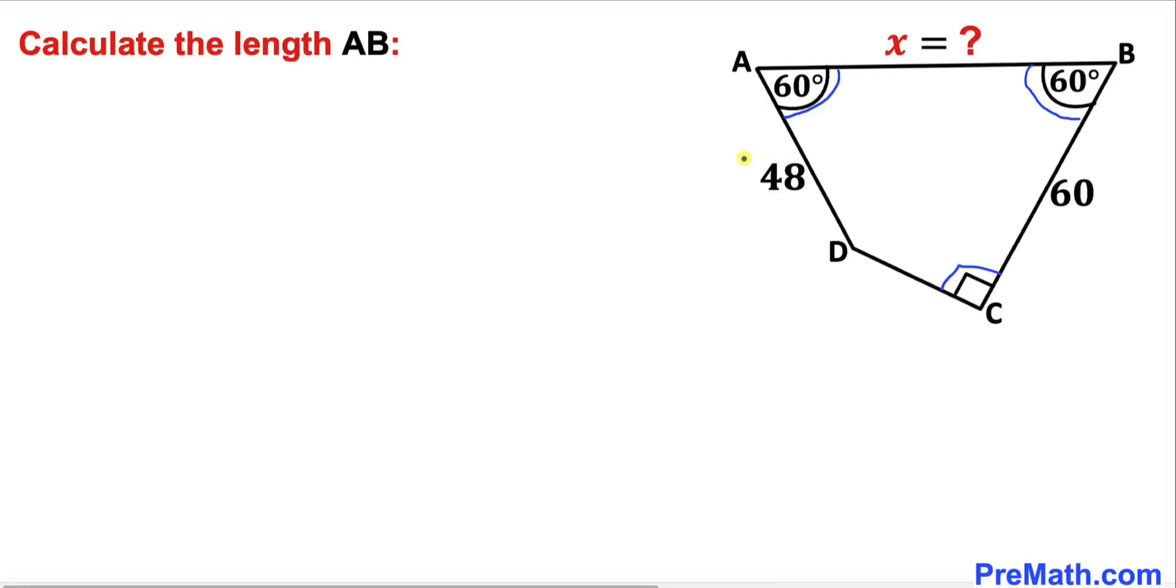Side length AD is 48 units and side length BC is 60 units. We're going to calculate the length AB. Please give a thumbs up and subscribe before we proceed.